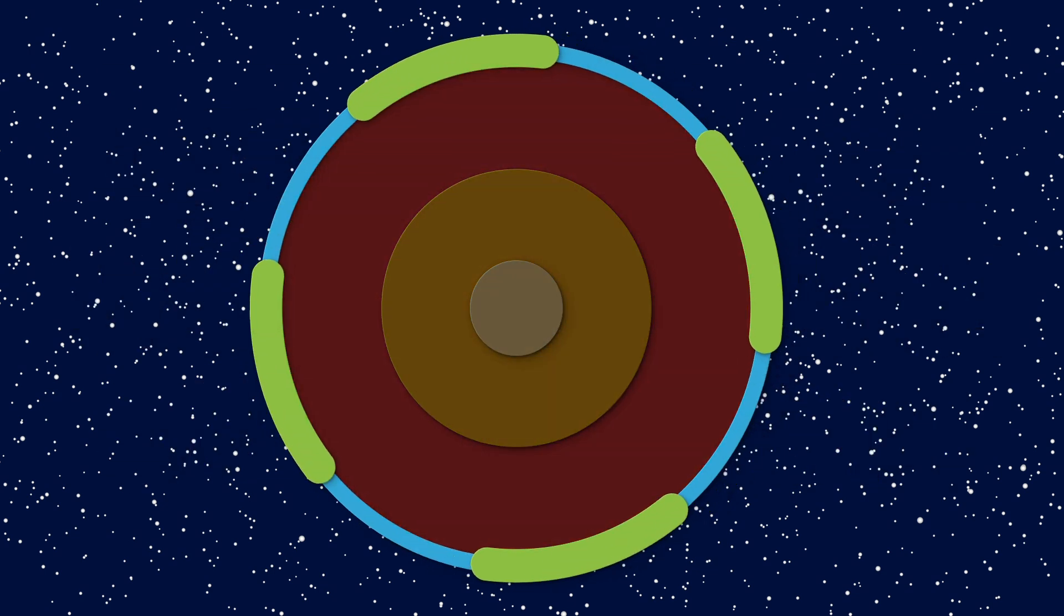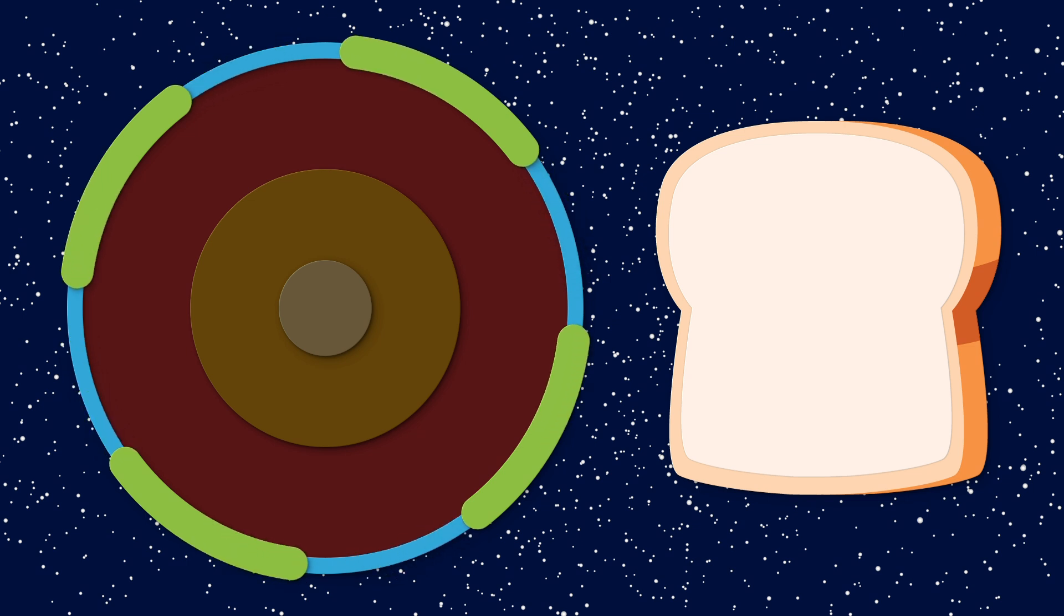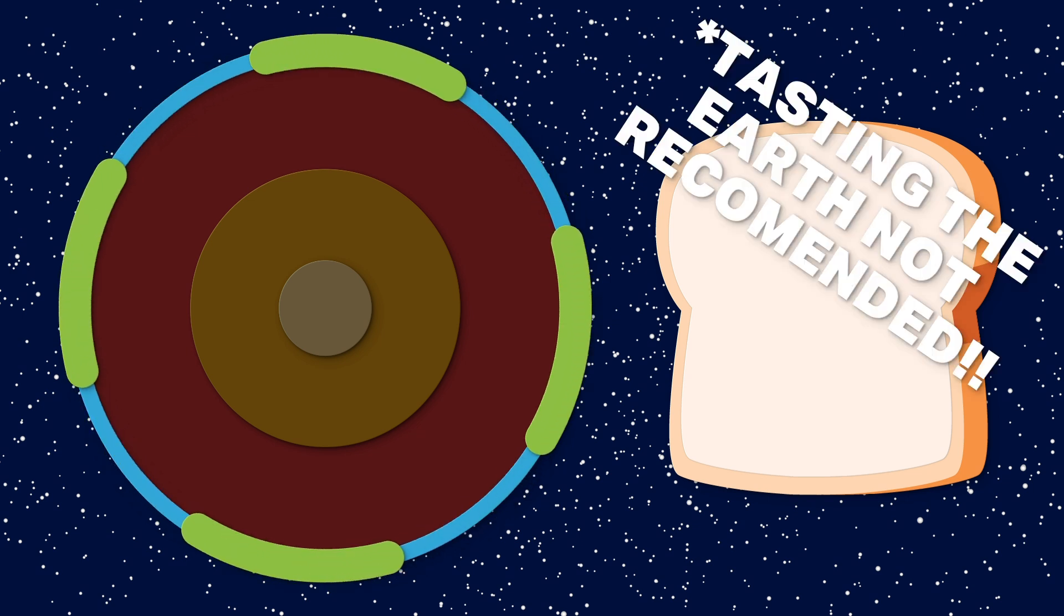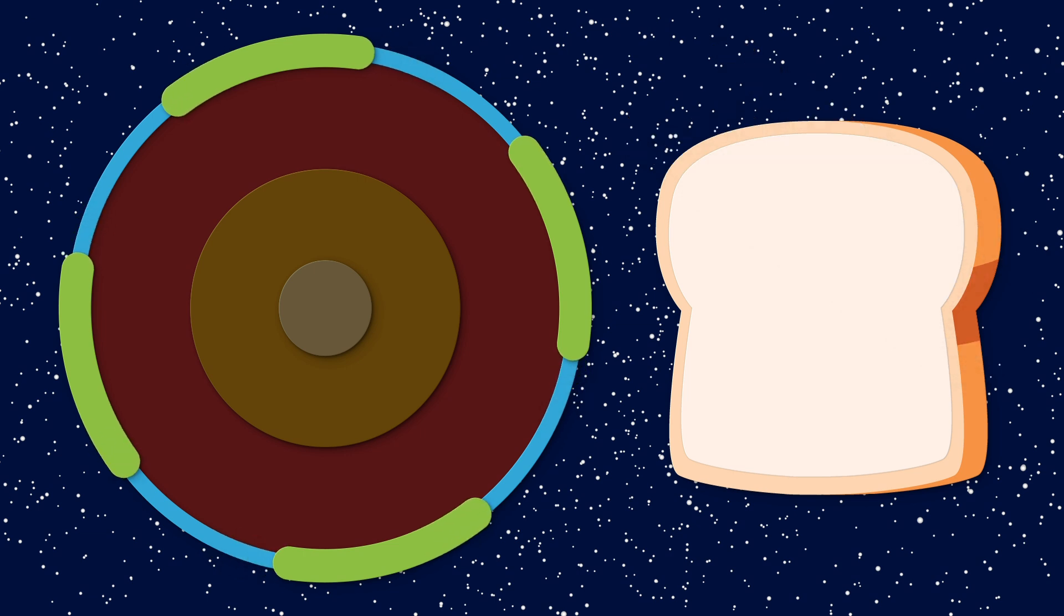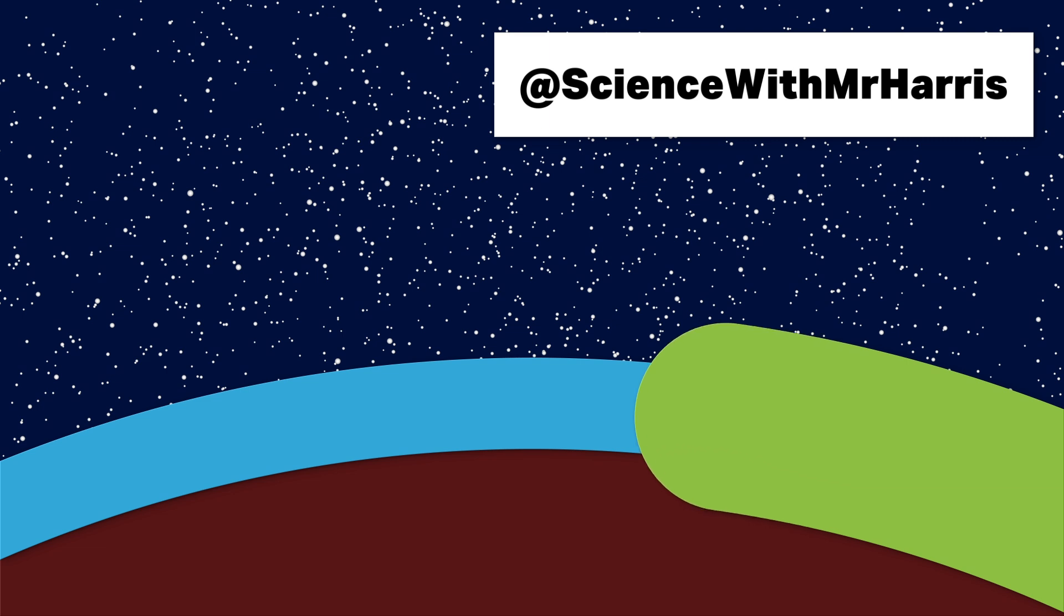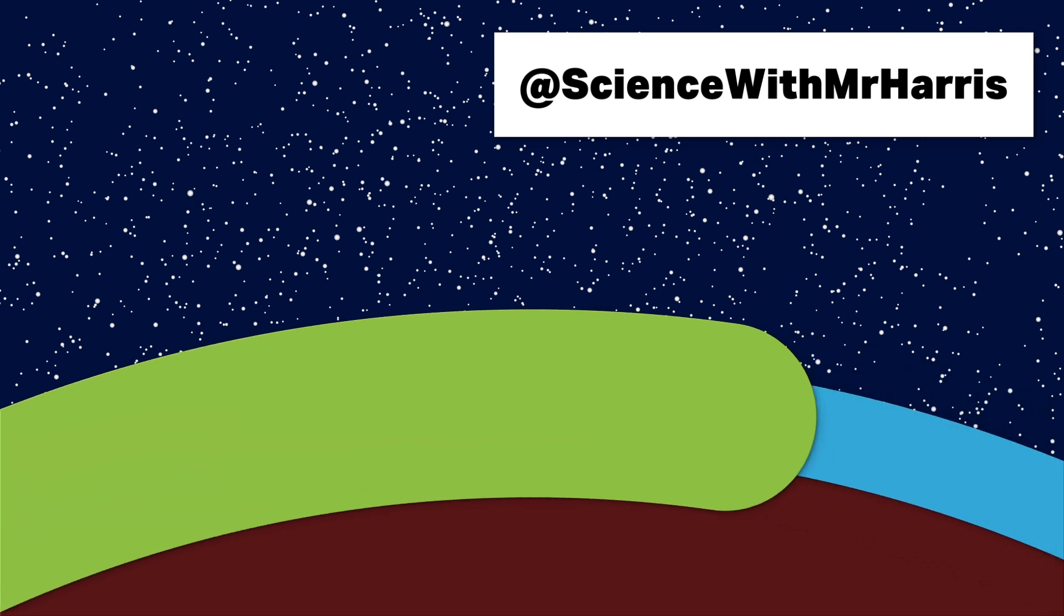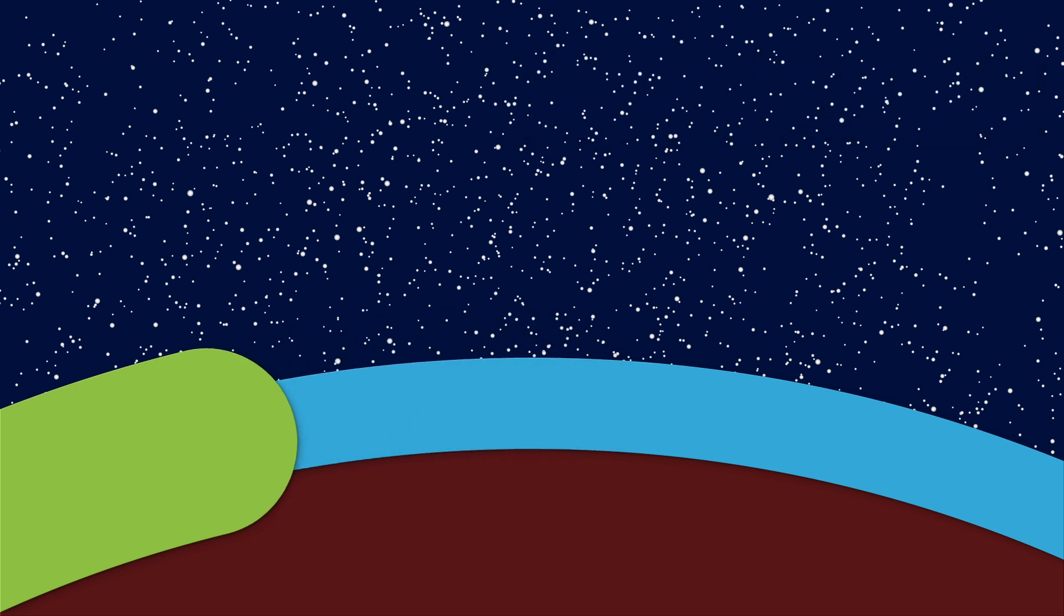First, there's the upper layer, the crust. The crust is like the thin outer layer of a piece of bread. It's chemically different from the layers below it, and you can tell that because it tastes different, also it's very thin compared to the whole slice. The crust can be either continental or oceanic, and it ranges from about 5 kilometers thick on the ocean floor to about 70 kilometers thick on the earth's tallest mountains.